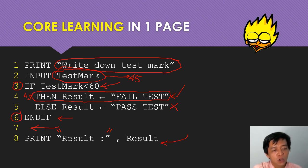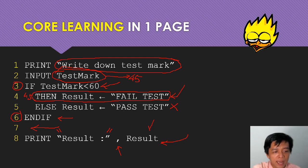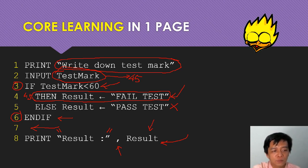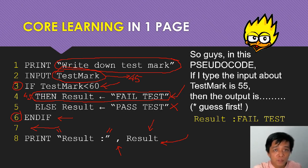Result, comma, result. If you don't put a comma, it will be an error. Because this result is a variable - result equals to fail test - so the result is fail test. If you don't put a comma between the string and the variable, it will be a syntax error.